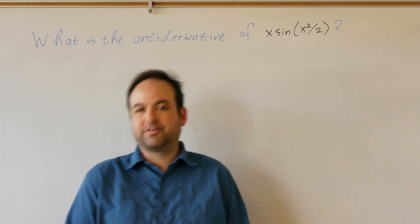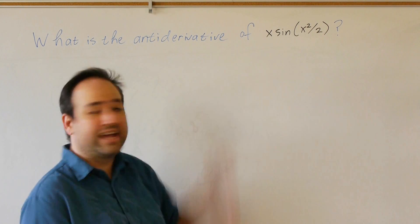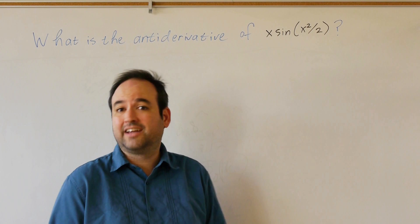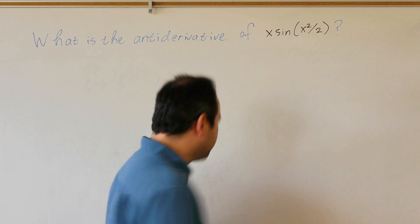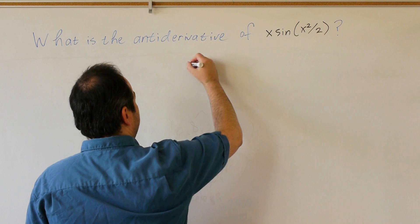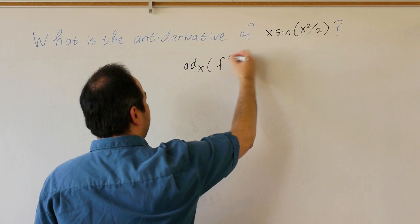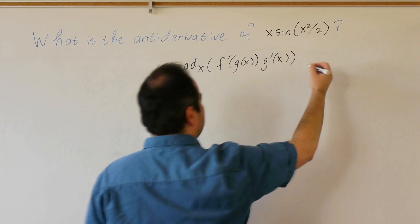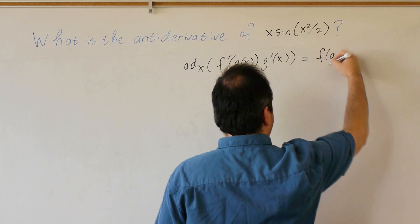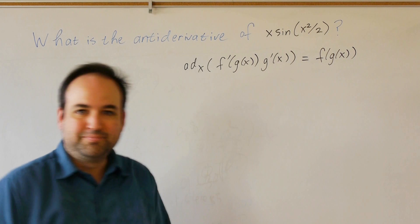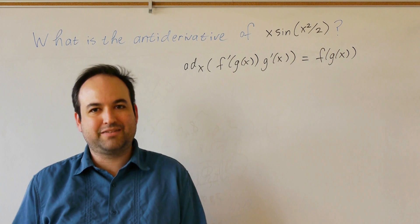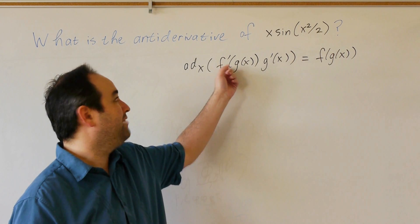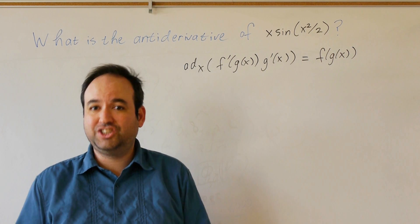Let's use this formula to find a particular antiderivative. Here we're trying to find the antiderivative of x times sine of x squared over 2. Remember our formula: the antiderivative with respect to x of f prime of g of x times g prime of x equals f of g of x. We need to identify which pieces come from f, f prime, g, and g prime.